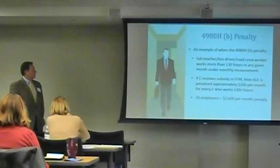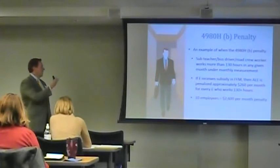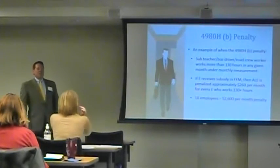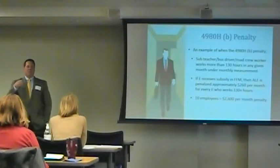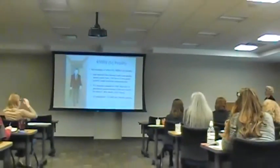If you have 10 employees this month with marketplace premium subsidies and you didn't offer affordable coverage, you're looking at about a $2,600 penalty for the month. As you get started with reporting, going back to January 1st, if you didn't manage your variable-hour employees you won't know your risk until you sit down and do the calculations. As you move forward in 2016, you want to get a handle on this. There is some protection if using the look-back measurement period.